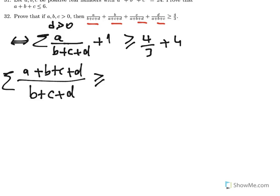So if we apply AM-HM inequality, this is greater than - since we have four terms - that will be 16 times (a+b+c+d).